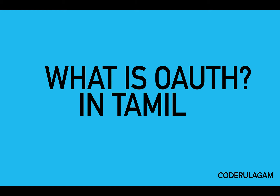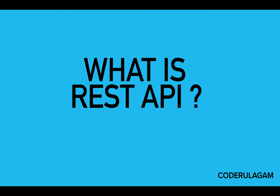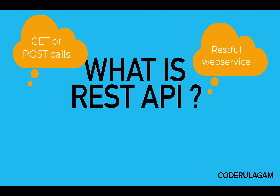In this video, we will talk about OAuth and how to use it. We will create APIs based on movies — a GET call and POST call to get all the movies by actor, or to save a movie. We will talk about REST APIs, which is basically a RESTful web service.